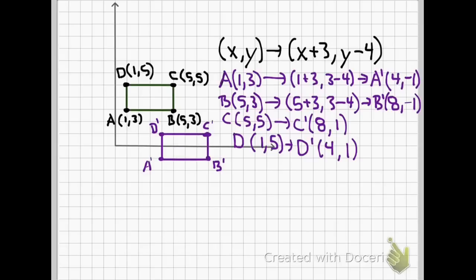It's translated down. Everything is moved down four and to the right three. We can move that any direction we want on the graph, but it's just using that notation that you have there. It's going to be your guide to how you need to move the points.